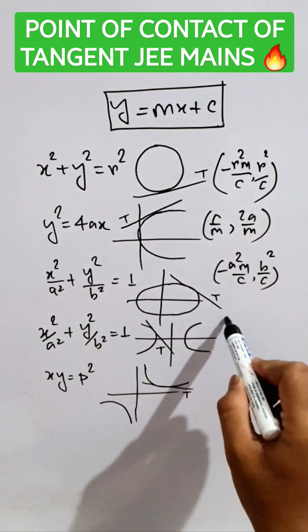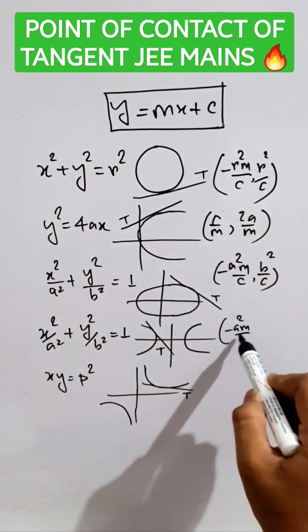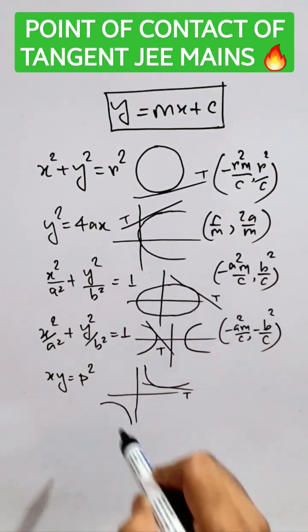Now, for this hyperbola, it will be minus A square M by C, comma, minus B square by C.